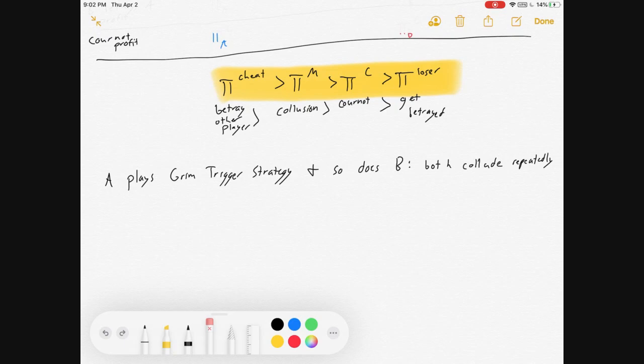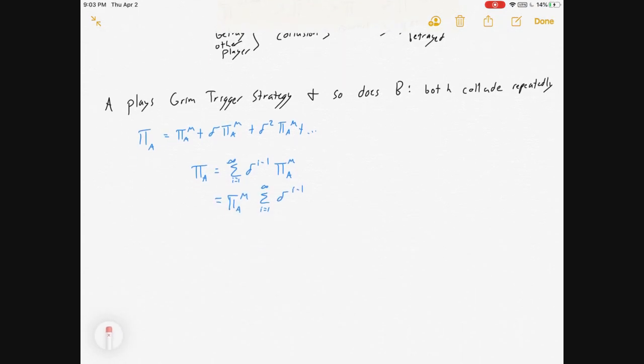So, if they both do their grim trigger strategy, they'll both collude repeatedly. They both start by colluding, and they answer with more colluding. Profit for firm A is equal to collusive profit, plus discounted collusive profit, plus double-discounted collusive profit, plus dot dot dot, is the sum from i equals one to infinity of discounted collusive profits. Now, here, I'm going to break the profit out of the sum. Since that profit is the same every time with just collusive profit, pi M, I can pull it out of the summation.